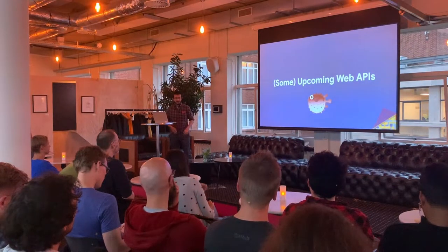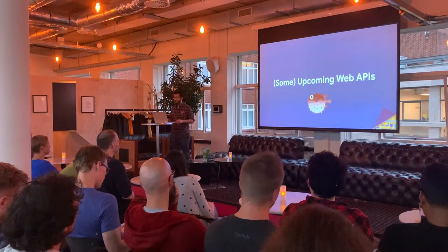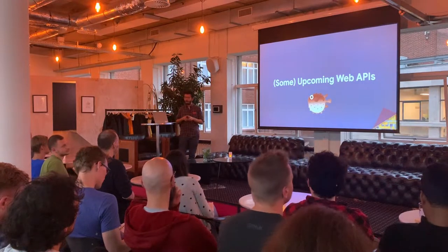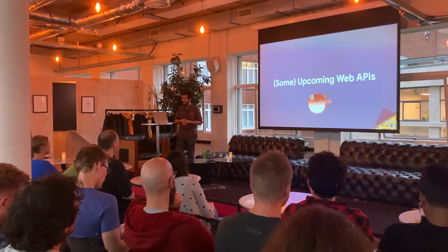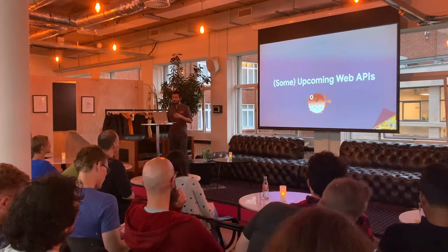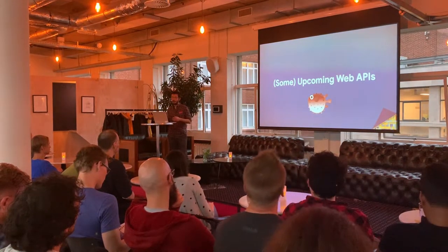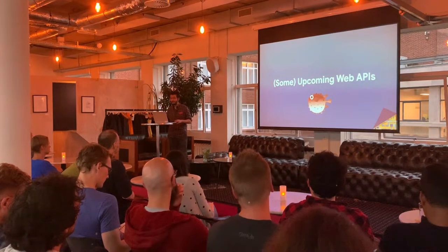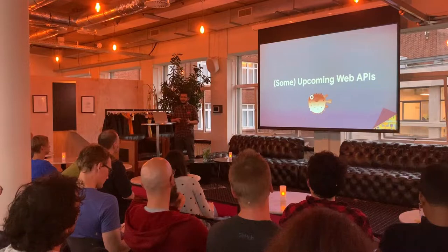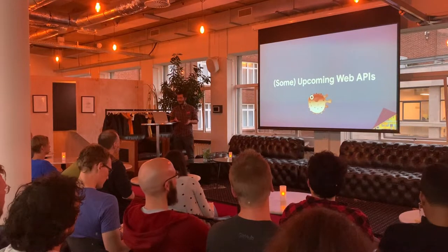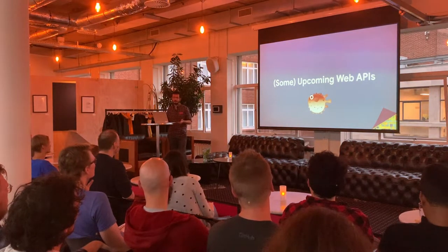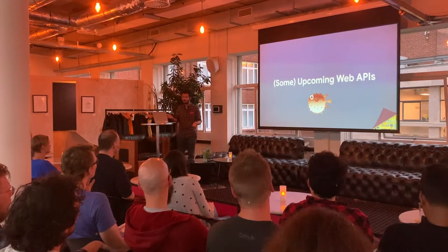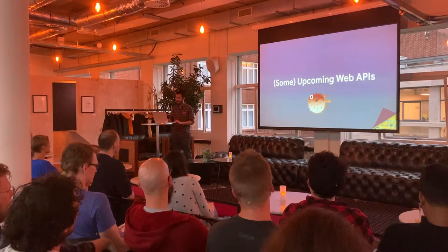This is a lot of theory so far, and I think some concrete examples will make this more exciting. I'll take the opportunity to focus on some APIs that my team has been working on, mostly because I'm more familiar with them. Bear in mind that I'll mention some estimates for shipping — they all have a tendency to slip depending on feedback or Google's own feature review process — but let's try to be optimistic.